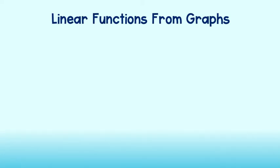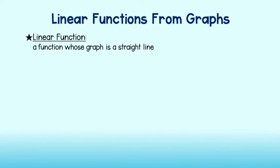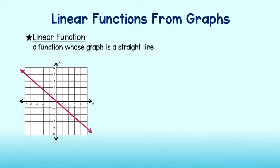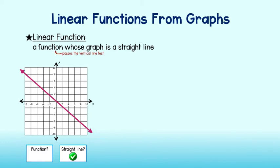A linear function is just a function whose graph is a straight line. Let's take a look at an example. We want to know if it is a function and if it is a straight line. We can see that it is a straight line, but is it a function? Recall that if it is a function it must pass the vertical line test. If you can draw a vertical line through two points on the graph then it is not a function and it does not pass the vertical line test.